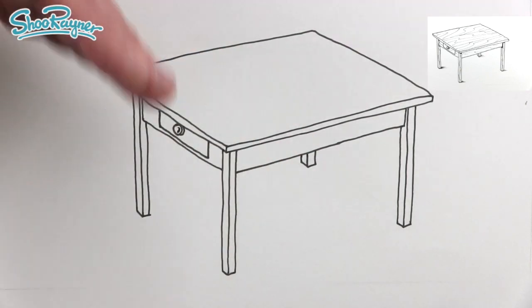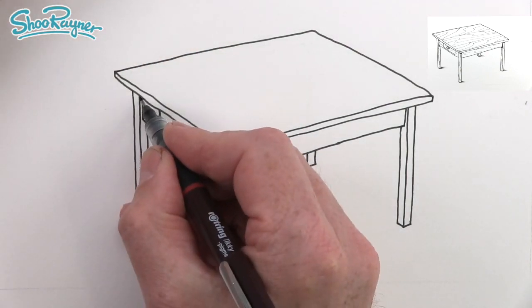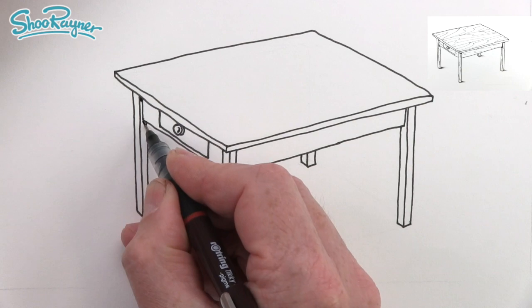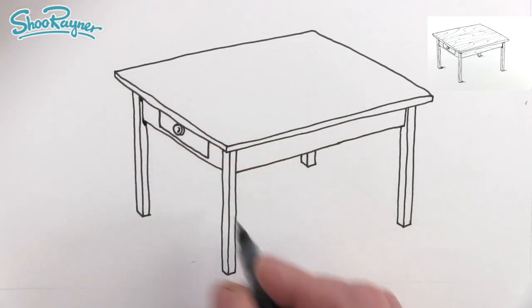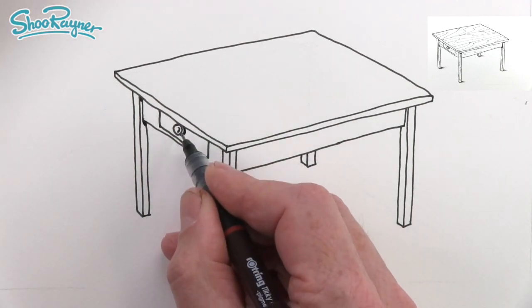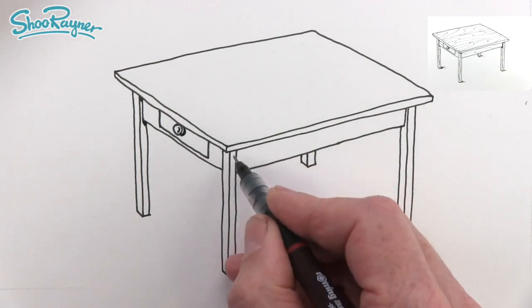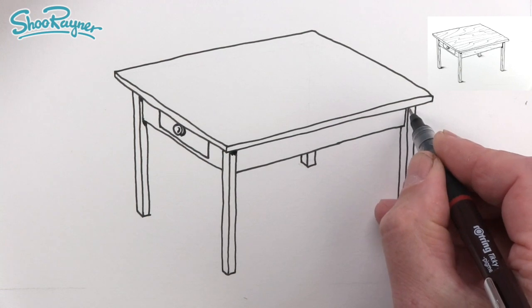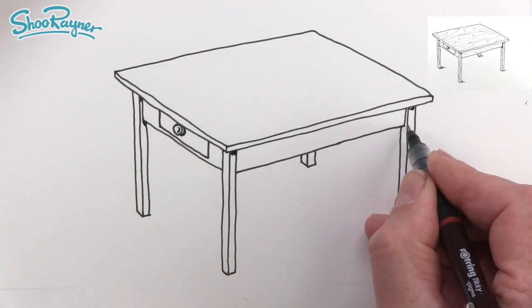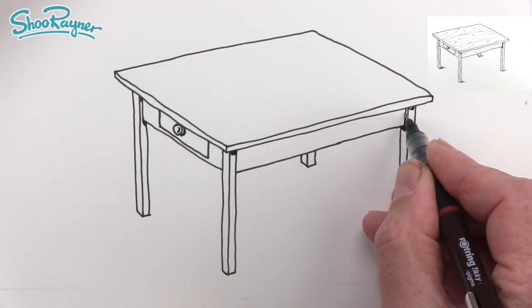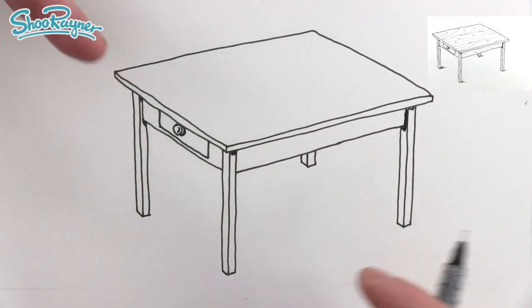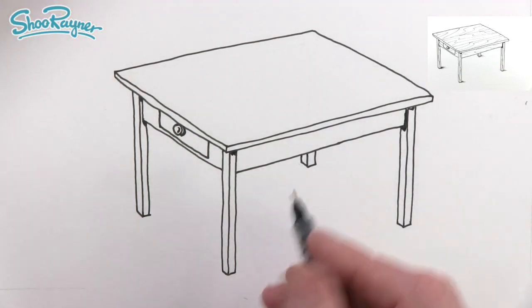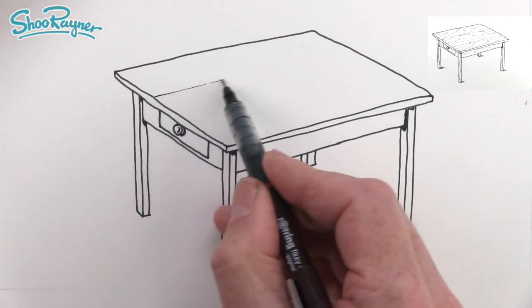I'm going to assume that the light is sort of coming this direction, so I'm going to put a little bit of shade going down there and a little bit of shade at an angle down there. Maybe a bit more on the drawer handle there, not doing too much really, just something just to add a little bit of three dimension to it.